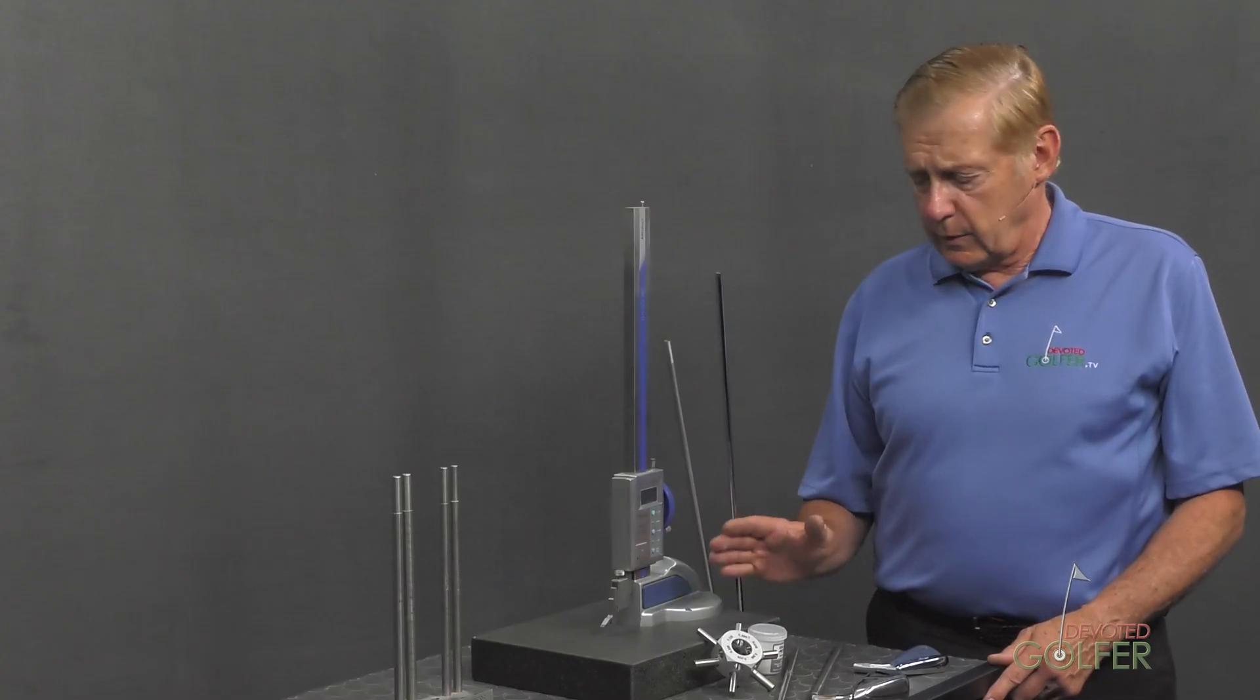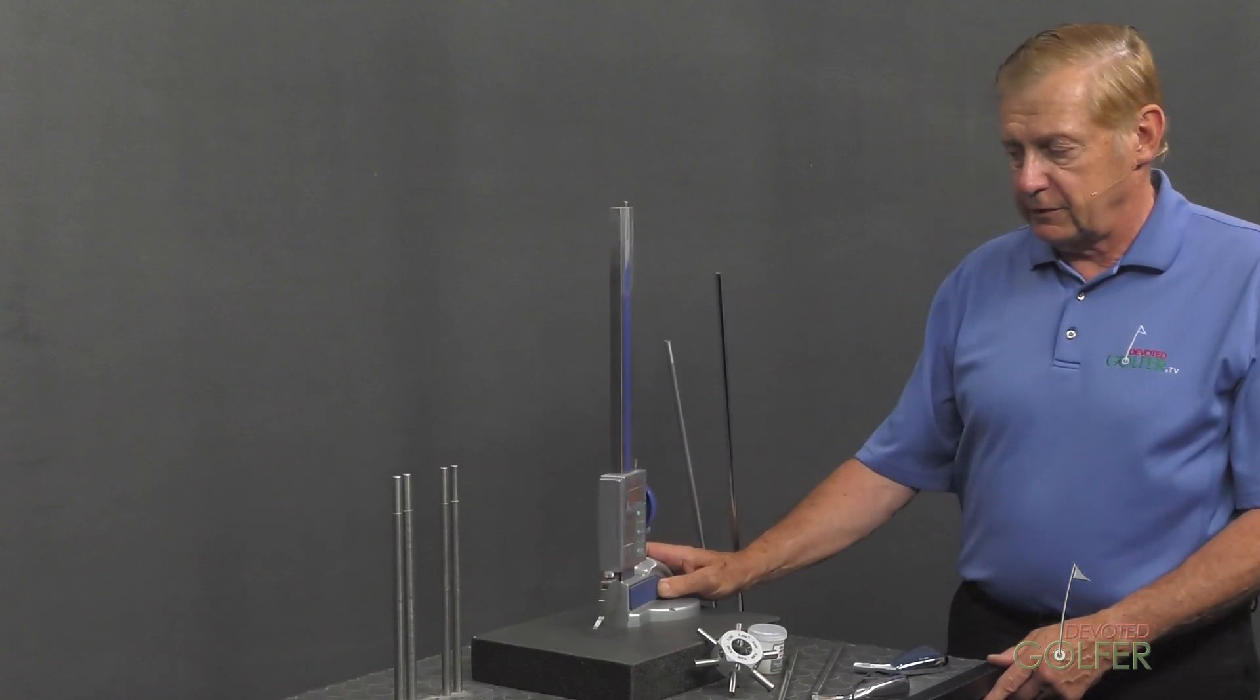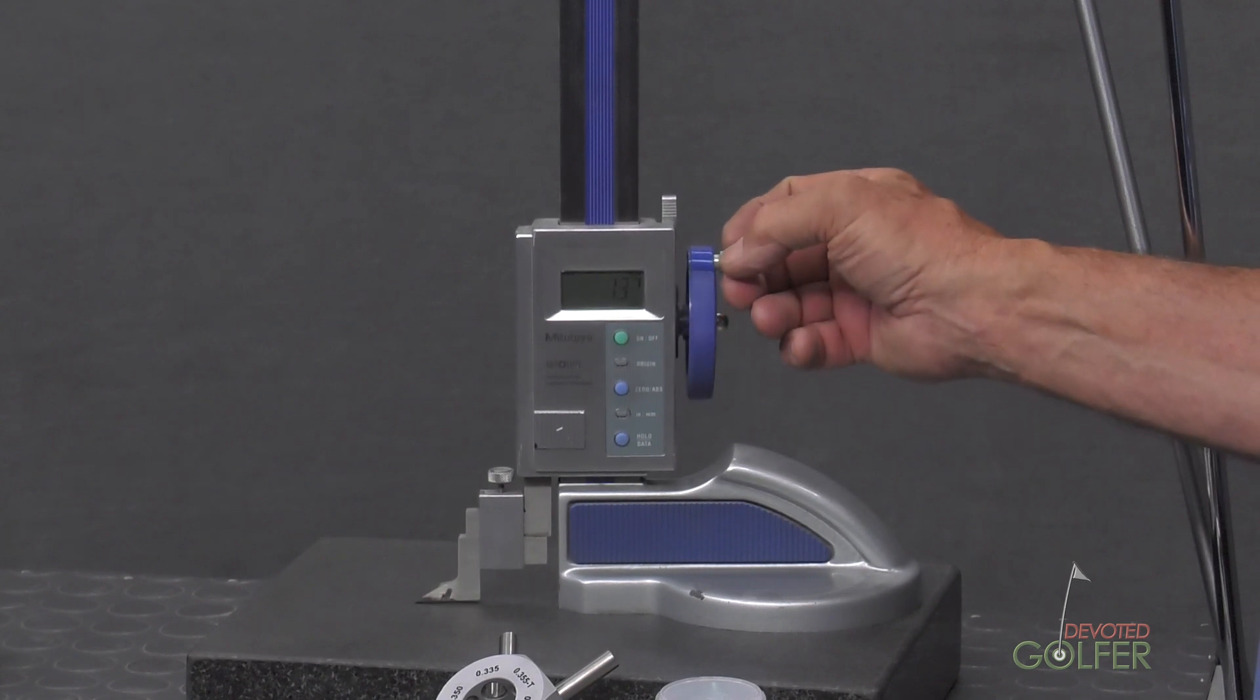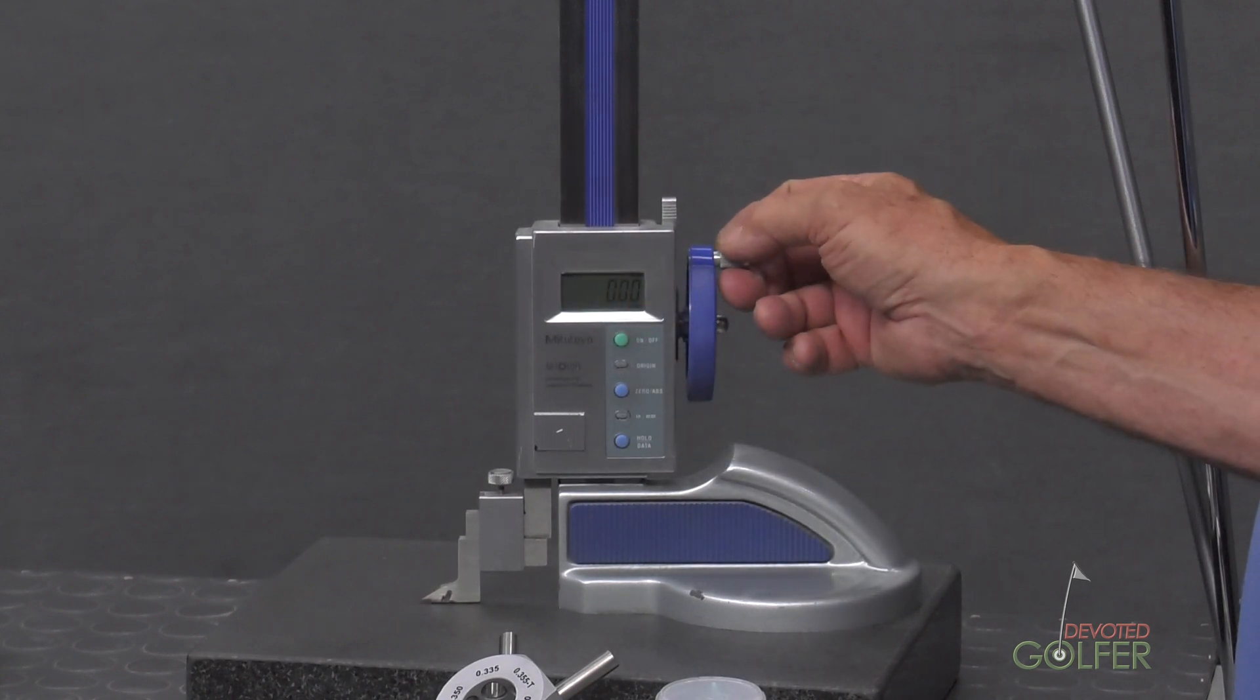What you're looking at right here is a slab of granite that's used in a machine shop with a very precise gauge. And when I take this gauge all the way down to the granite top, I'm at zero.